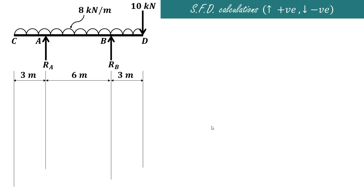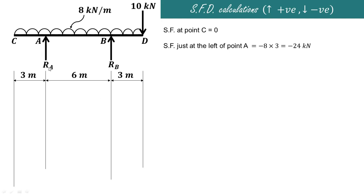Now we will draw the shear force diagram. Upward forces are considered positive and downward forces negative. Shear force at point C is zero. Just to the left of A, considering only the UDL between C and A: for 3 meters at 8 kilonewtons per meter, the shear force is minus 8 into 3, which is minus 24 kilonewtons. Exactly at point A, adding the upward reaction Ra: minus 24 plus 43 gives positive 19 kilonewtons.